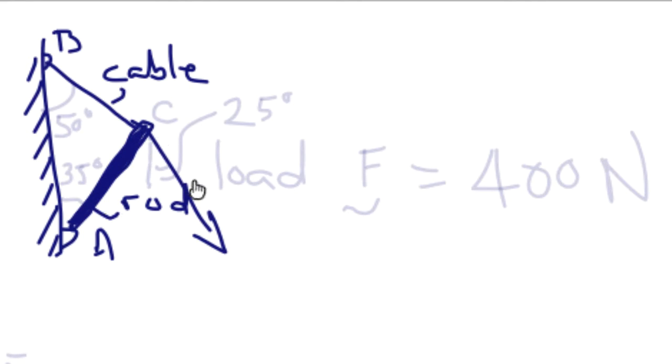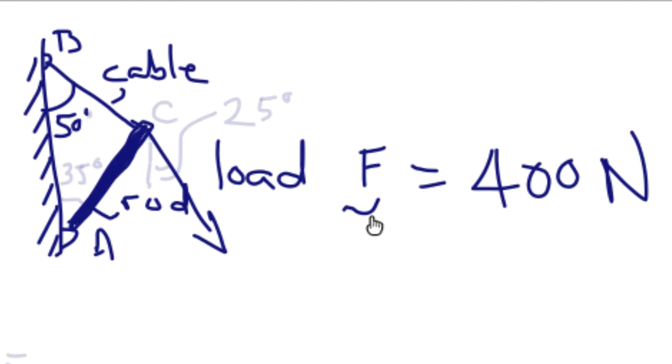Then an external force is applied at C with a load of 400 newtons. Now, the orientation of the structures are given, so the angle between the cable and the wall is 50 degrees, the angle between the rod and the wall is 35 degrees, and the angle between the load and the vertical is 25 degrees.